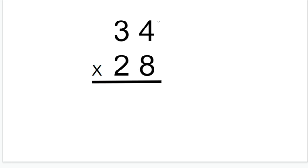To start I need to go column by column. I have 34 times 28 here. I'm just going to be multiplying 4 times 8 first, which I know is 32.